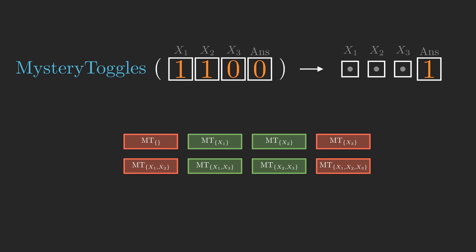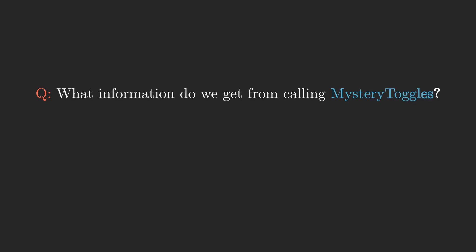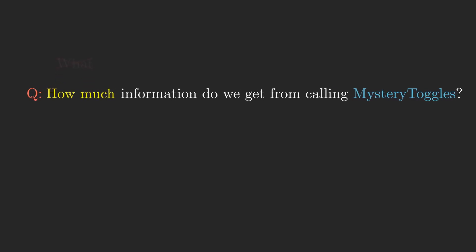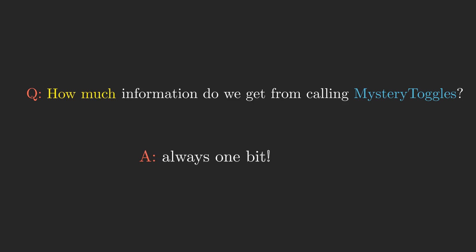To prove we can't do any better, it's natural to think about a question like: what information do we get from a call to mystery toggles? But even better is the question: how much information do we get from a call to mystery toggles? And as we saw a moment ago, the answer is actually always one bit of information, the answer bit.